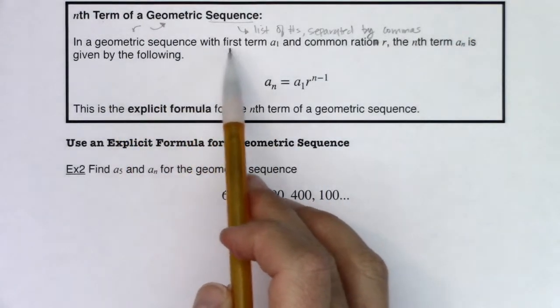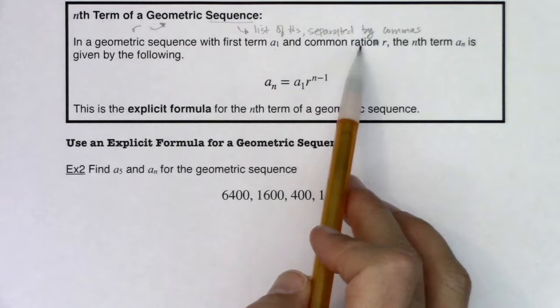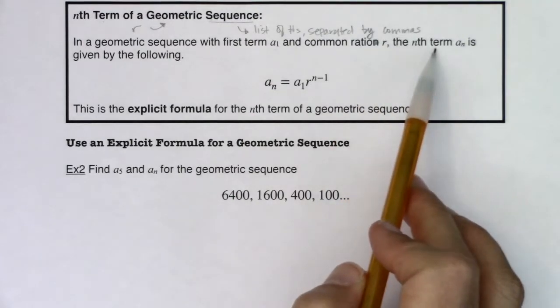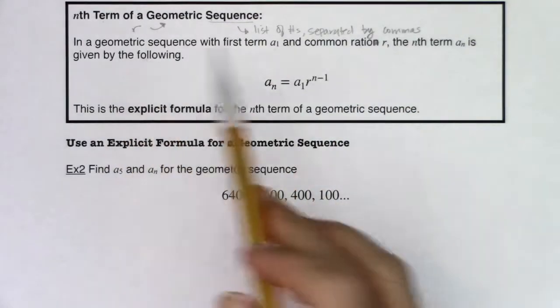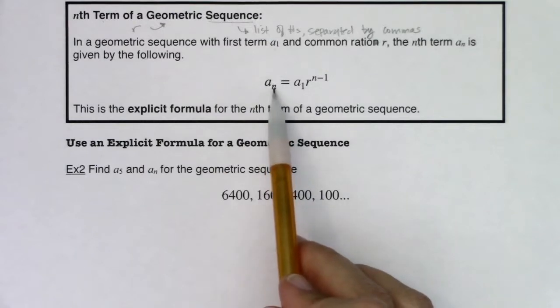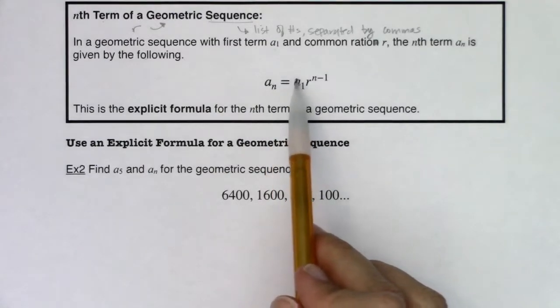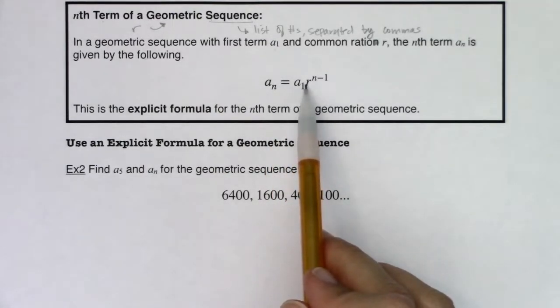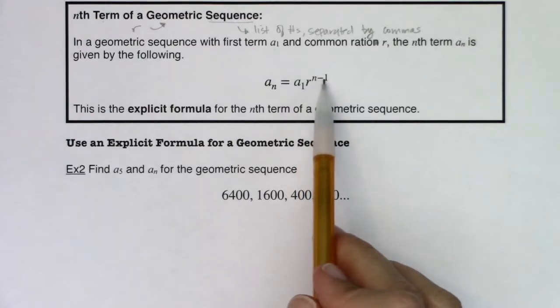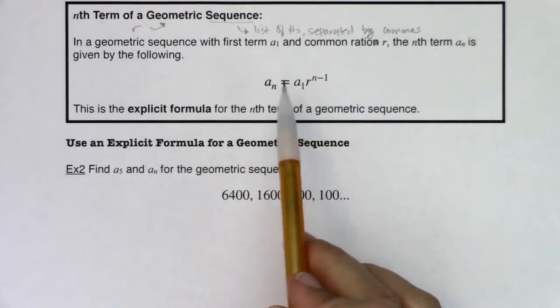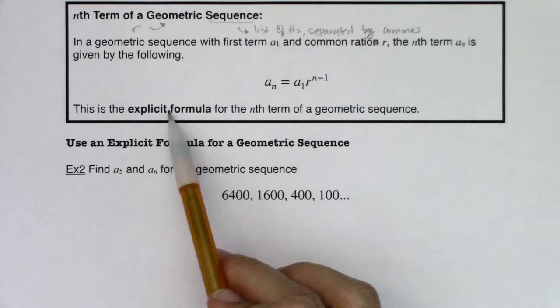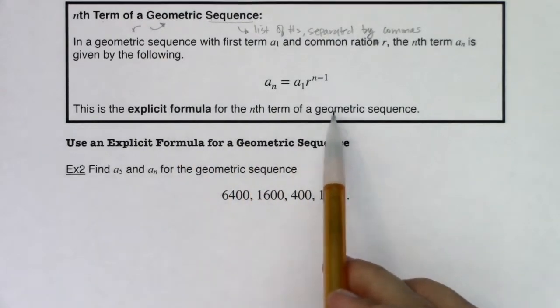In a geometric sequence with the first term a sub 1 and a common ratio R, the nth term a sub n is given by the following: a sub n equals the first term a sub 1 times R raised to the n minus 1 power. This is the explicit formula for the nth term of a geometric sequence.